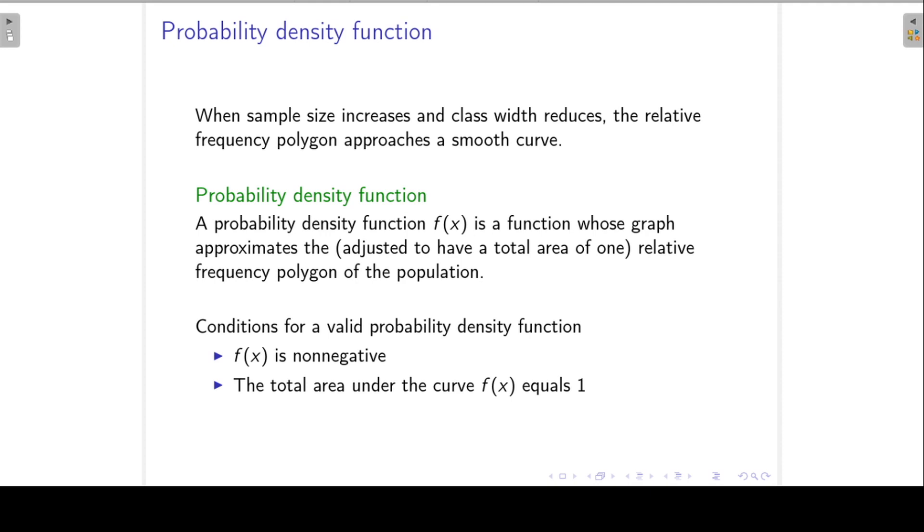For a function to be a valid probability density function, the function must always be non-negative, and the total area under the curve of this function must be equal to 1.